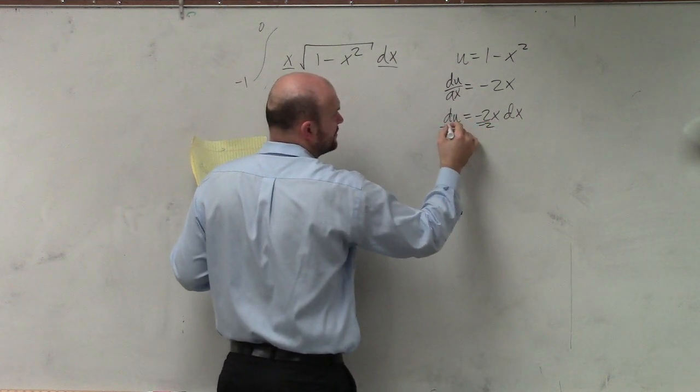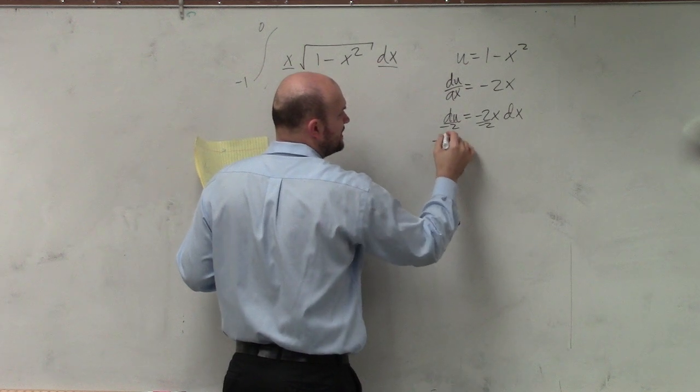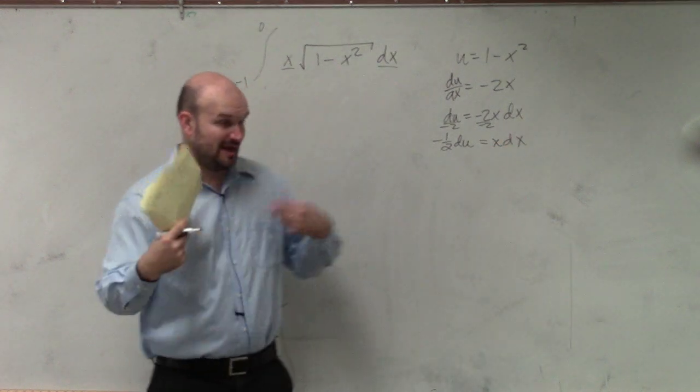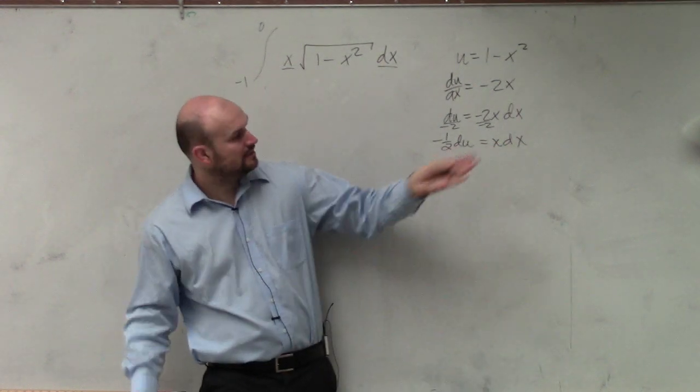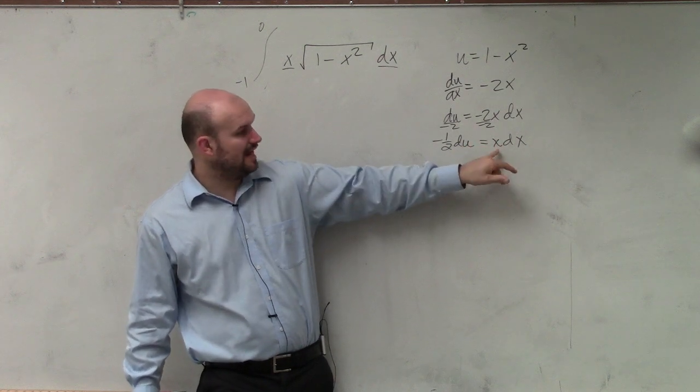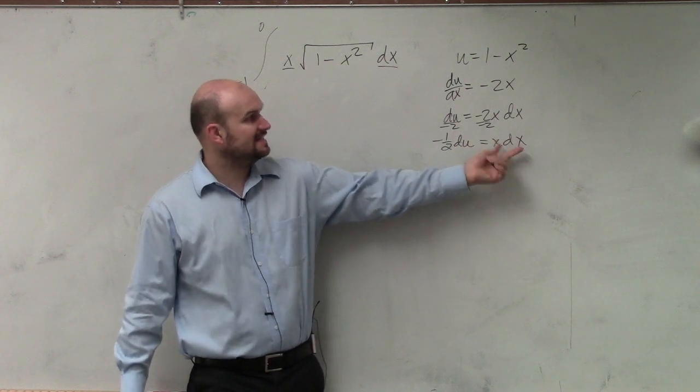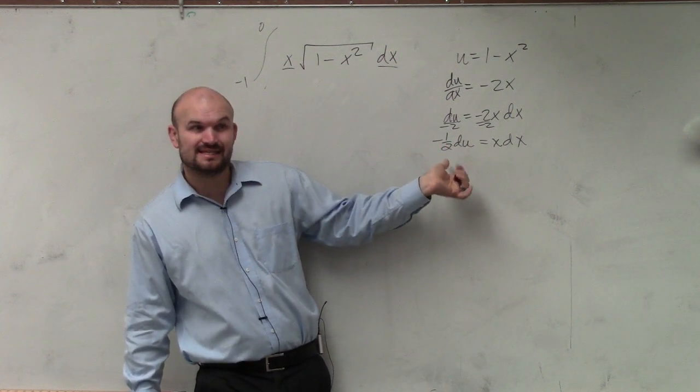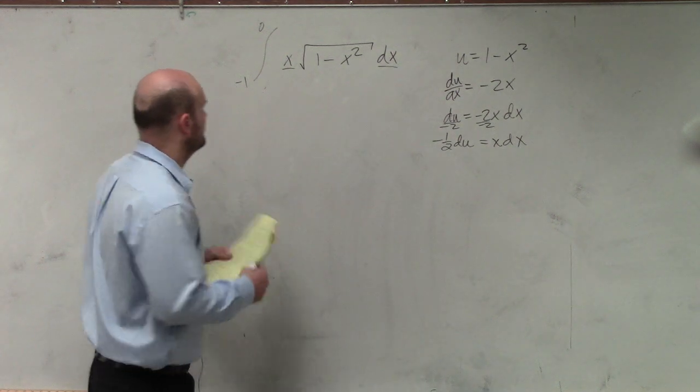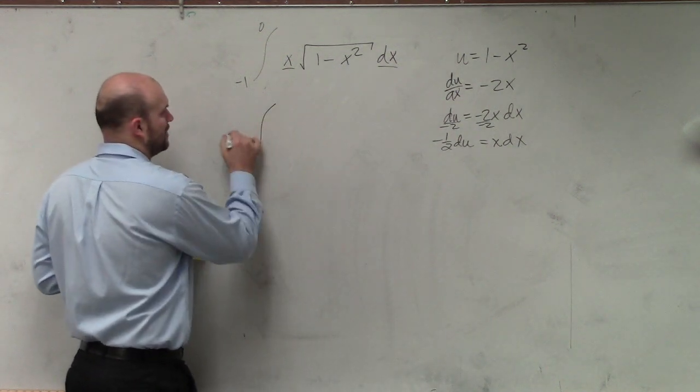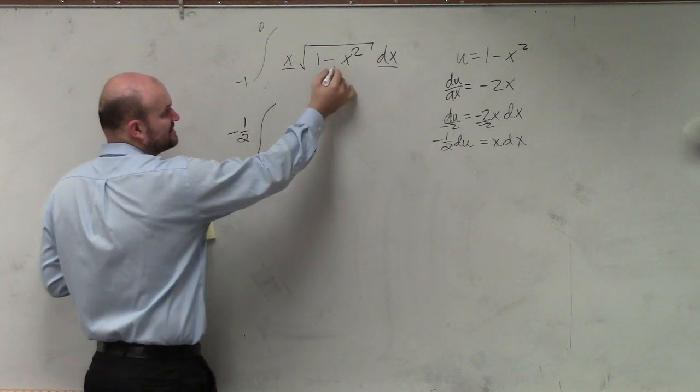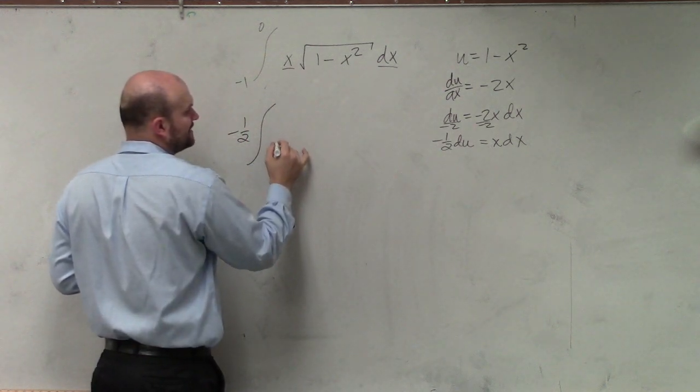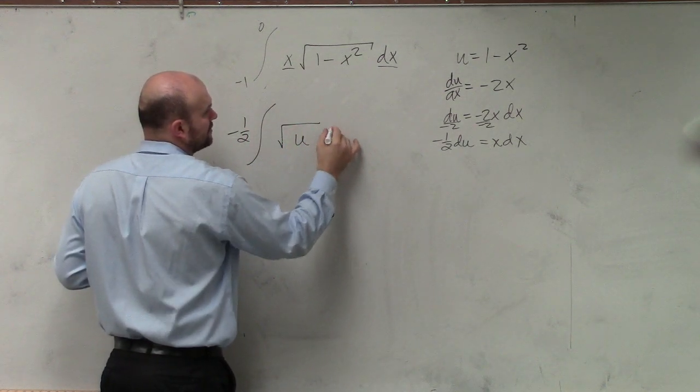So by dividing by negative 2 on both sides, I can say negative 1/2 du equals x dx. So when I write this new equation in terms of u, instead of having x dx, I'm going to replace that with negative 1/2 du. Well, since negative 1/2 is a constant, I can pull that out of my integral. So I'm going to pull that out. And then I have my x and dx covered with my du. And then I'm going to have the square root of u du.